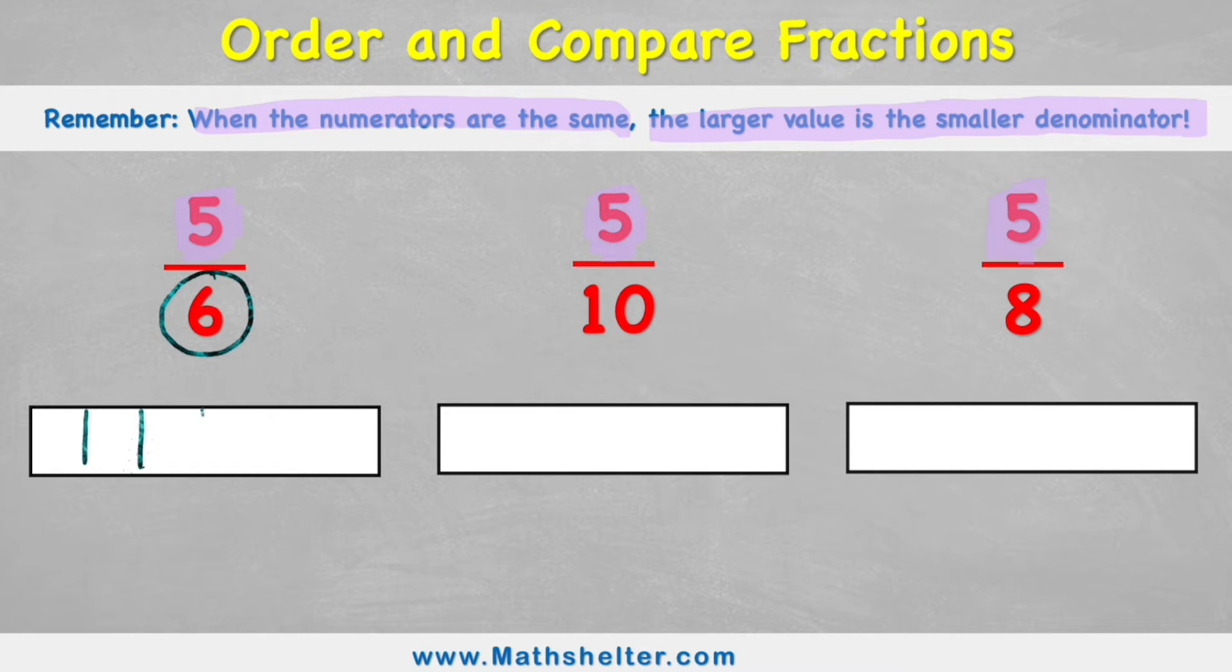One, two, three, four, five, and six. Whereas the second one has been split into ten pieces. So we'd have one, two, three, four, five, six, seven, eight, nine, and ten.